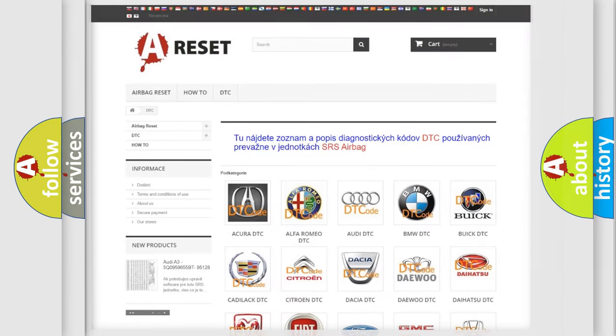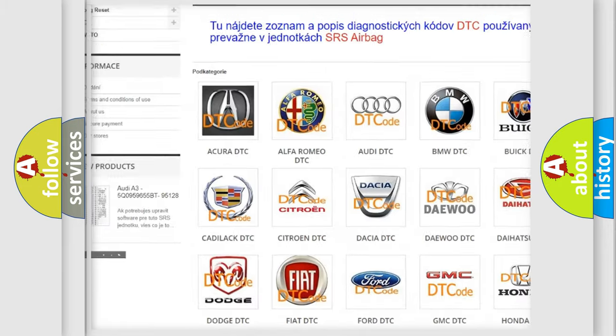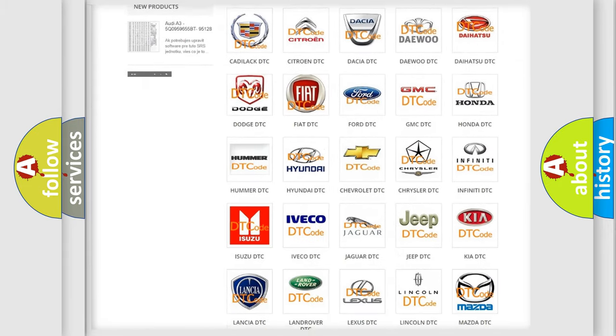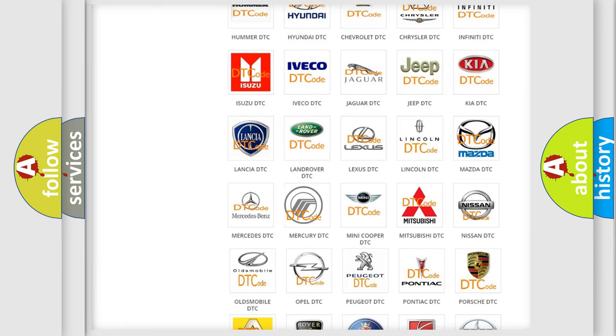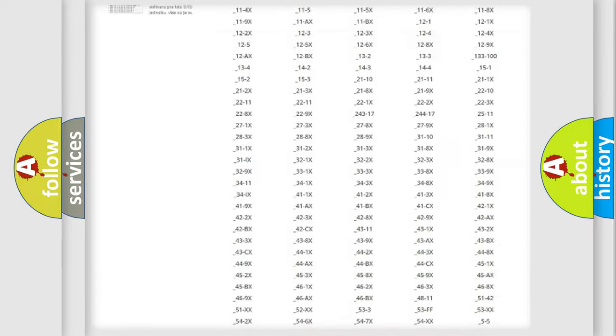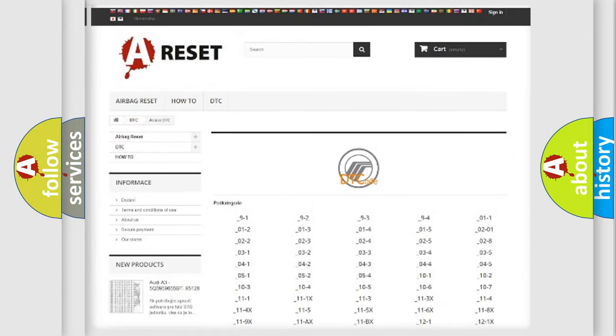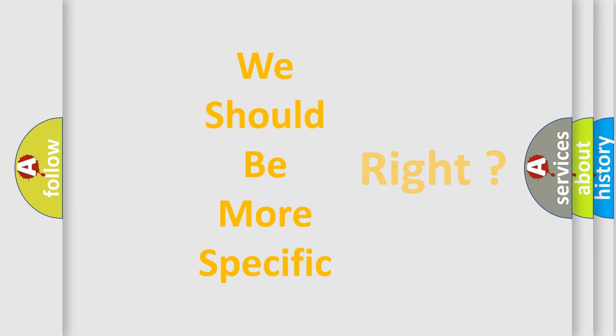Our website airbagreset.sk produces useful videos for you. You do not have to go through the OBD2 protocol anymore to know how to troubleshoot any car breakdown. You will find all the diagnostic codes that can be diagnosed in Mercury vehicles, and many other useful things. The following demonstration will help you look into the world of software for car control units.